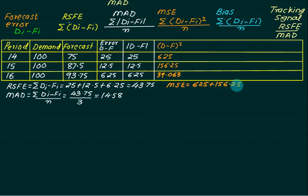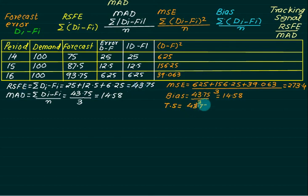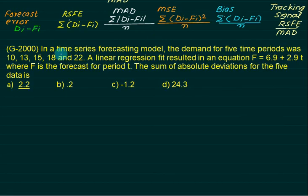The most commonly used error is MSE, that value comes out to be 273.4. Next we'll check for bias. Bias is the average value of errors. RSFE is 43.75 divided by sample data n, so this value comes out to be 14.58. Finally, tracking signal is the ratio of RSFE divided by MAD: 43.75 divided by 14.58, so tracking signal comes out to be three.